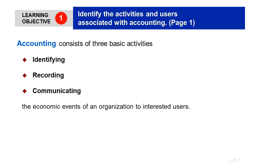Once identified, we move into recording. In recording, we record all the transactions found in the first step to keep track of all the events. When we finish recording, we communicate. We communicate all the recording by issuing accounting reports. For example, an accountant working all day sends the accounting reports to his manager, who will then know all the events that occurred during the day. So communicating is very important in the whole process.